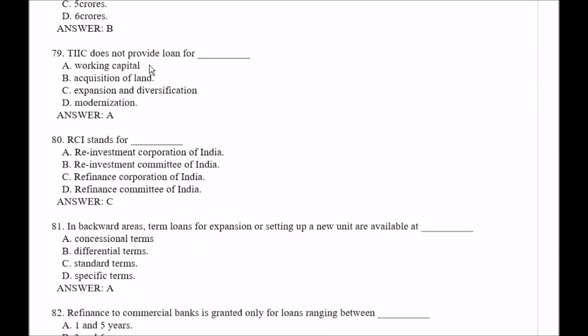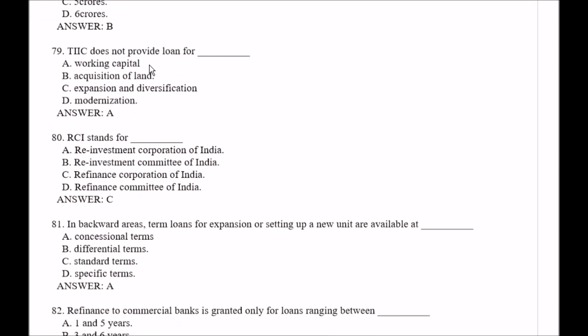Question number 79: TIIC does not provide loan for — Option A, working capital; Option B, acquisition of land; Option C, expansion or diversification; Option D, modernization. The right answer is Option A, that is working capital.